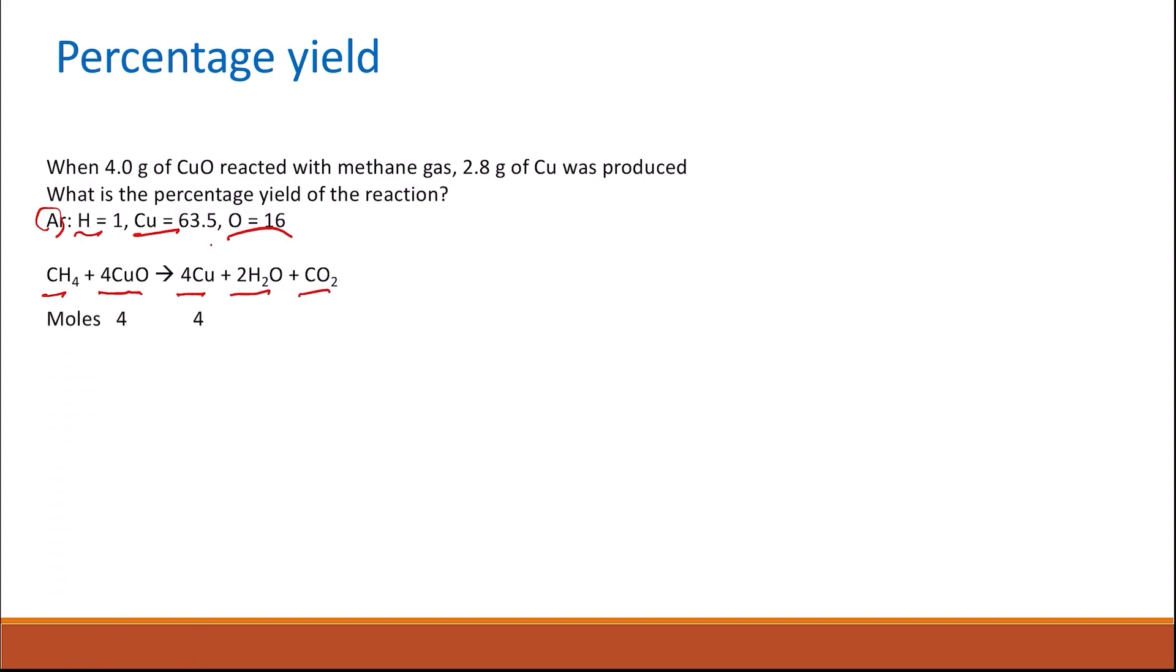In this reaction, you can see that 4 moles of copper oxide will give you 4 moles of copper. So equimolar. Now we need to find the actual moles of copper oxide that reacted. And to find the number of moles, we simply divide mass by the formula mass. So 4 divided by the formula mass of copper oxide, which is 79.5, that will give you 0.05 moles.